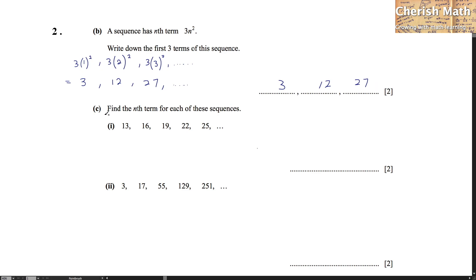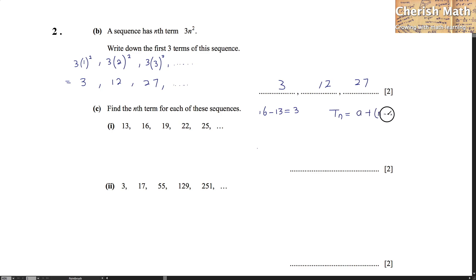Here is part C: find the nth term for each of these sequences. The first term is 13 and 16 is the second term. We're going to find the term-to-term rule by using 16 minus 13, and what we get is 3. We are using the formula: nth term = a + (n minus 1) multiplied by d, where a stands for the first term, d stands for the term-to-term rule, and n stands for n.